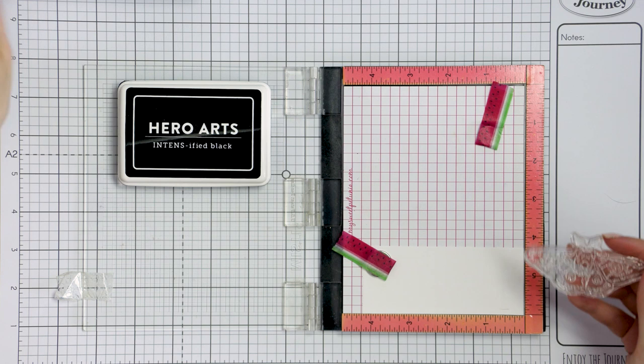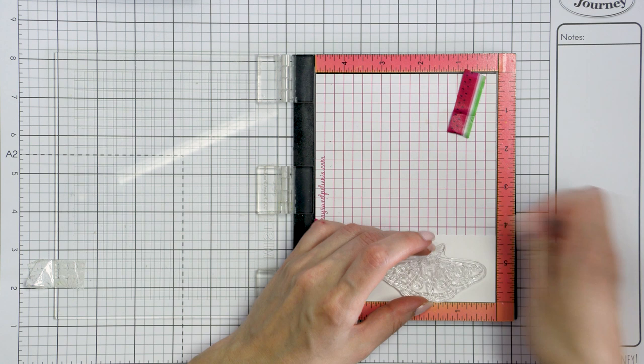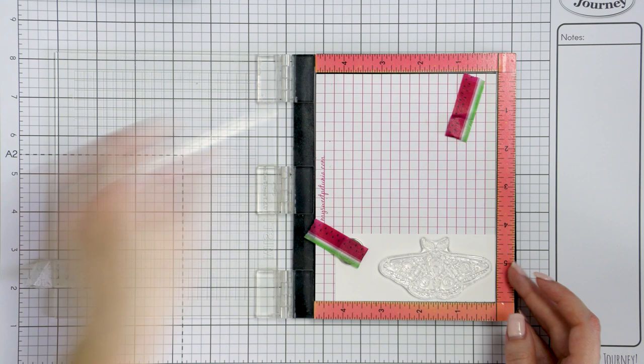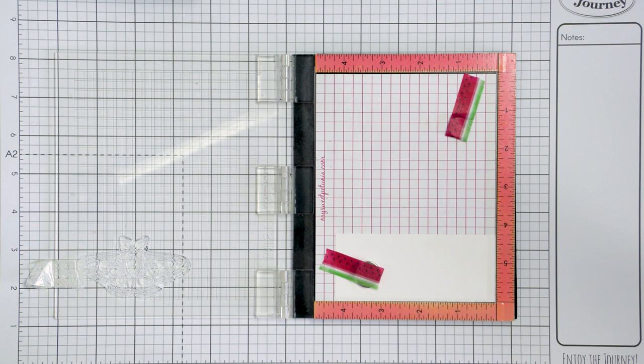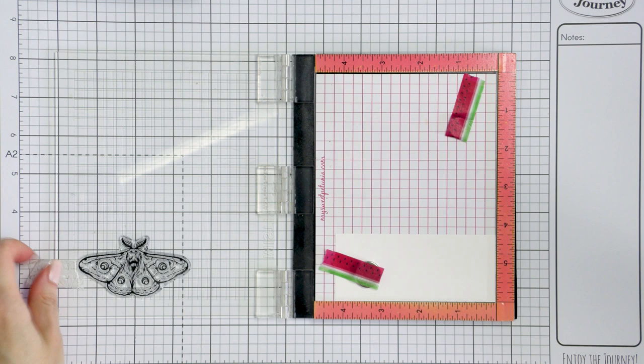I'm going to start by stamping the outline in Hero Arts Intensified Black. I have pre-cut white cardstock panels to smaller size panels so that each panel will fit one moth image. I've done that to make it easier to stamp these quickly and efficiently with the help of my Mini MISTI stamping tool.